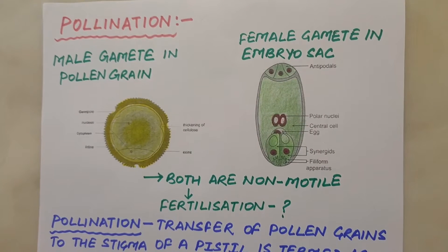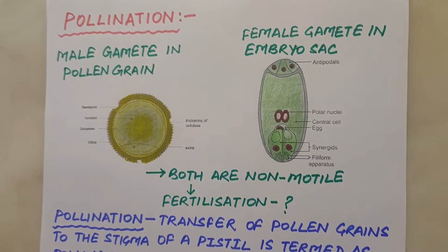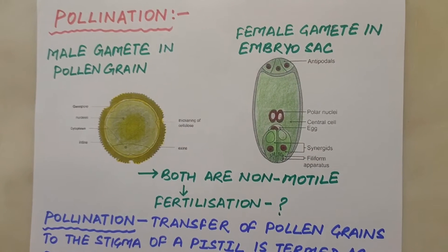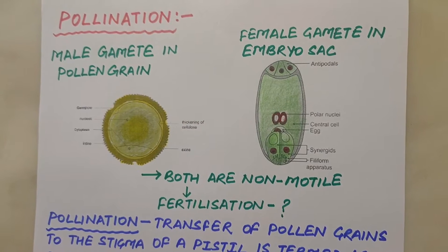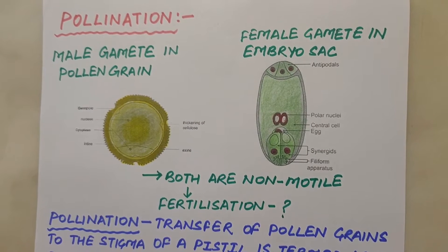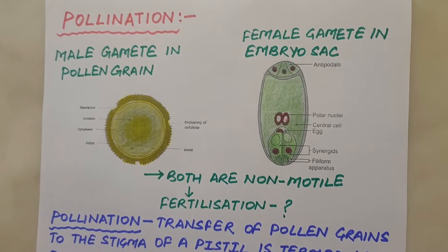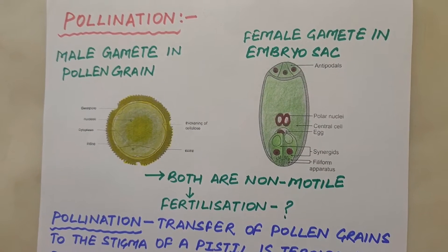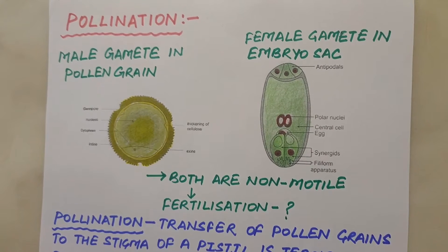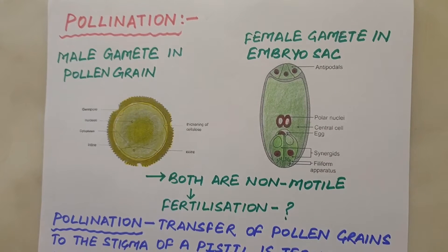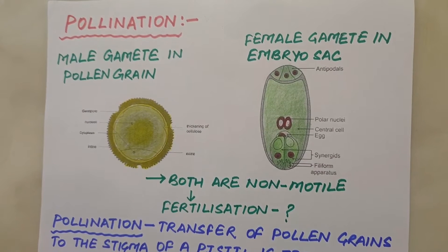Good morning everyone. This is the fourth video of chapter 2 of class 12th, sexual reproduction in flowering plants. In our previous video, we have discussed about microsporogenesis, structure of pollen grain and megasporogenesis.